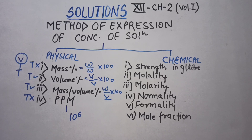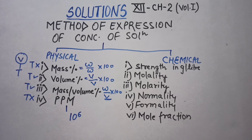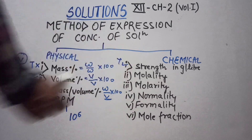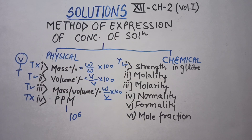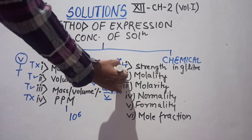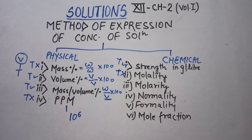Under chemical basis, strength has units of gram per liter — since it involves volume (liters), it is temperature dependent. Molality is moles of solute divided by solvent per kg — it depends on weight, not volume, so it is temperature independent.